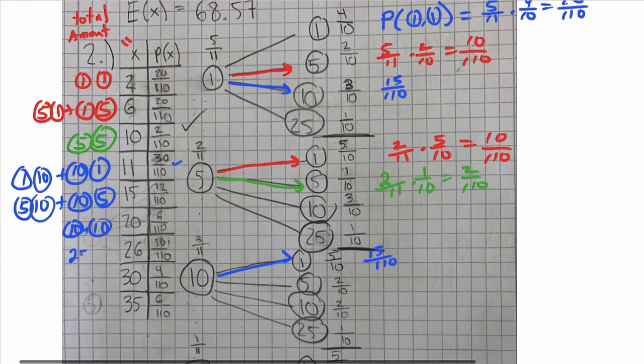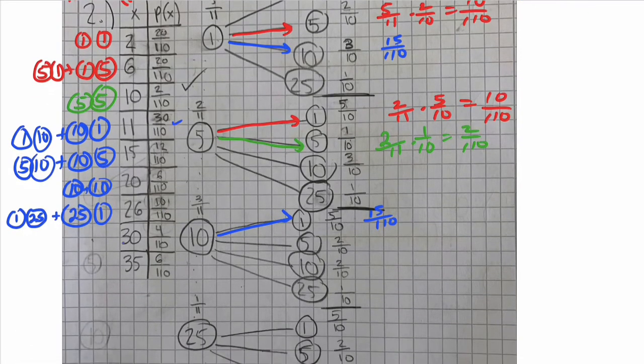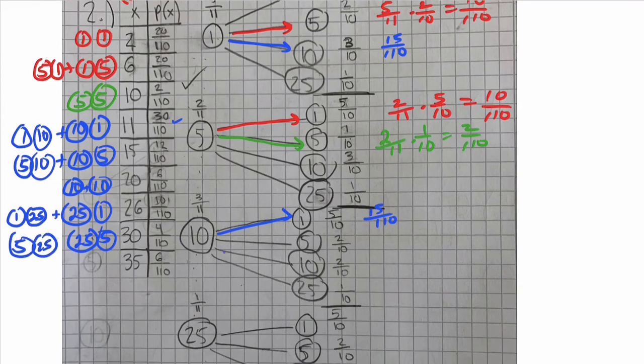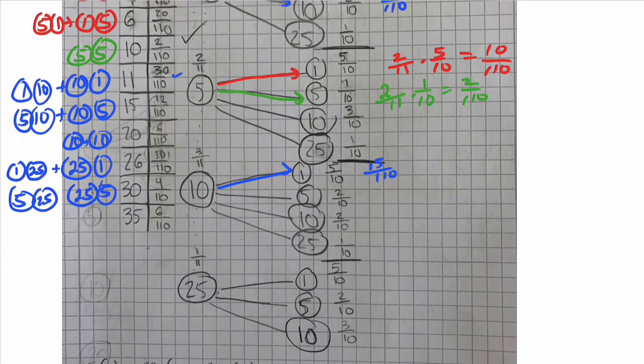Twenty-six is if you've got a twenty-five-cent coin and a one-cent coin, or the first one's a one-cent coin, the second one's a twenty-five-cent coin. So we add those probabilities together. Thirty cents is a twenty-five-cent coin and a five-cent coin, or a five-cent coin and a twenty-five-cent coin. So we add those two probabilities together. So that's over here, twenty-five, five, that's one-eleventh times two-tenths is two out of 110. So double that, you get four.